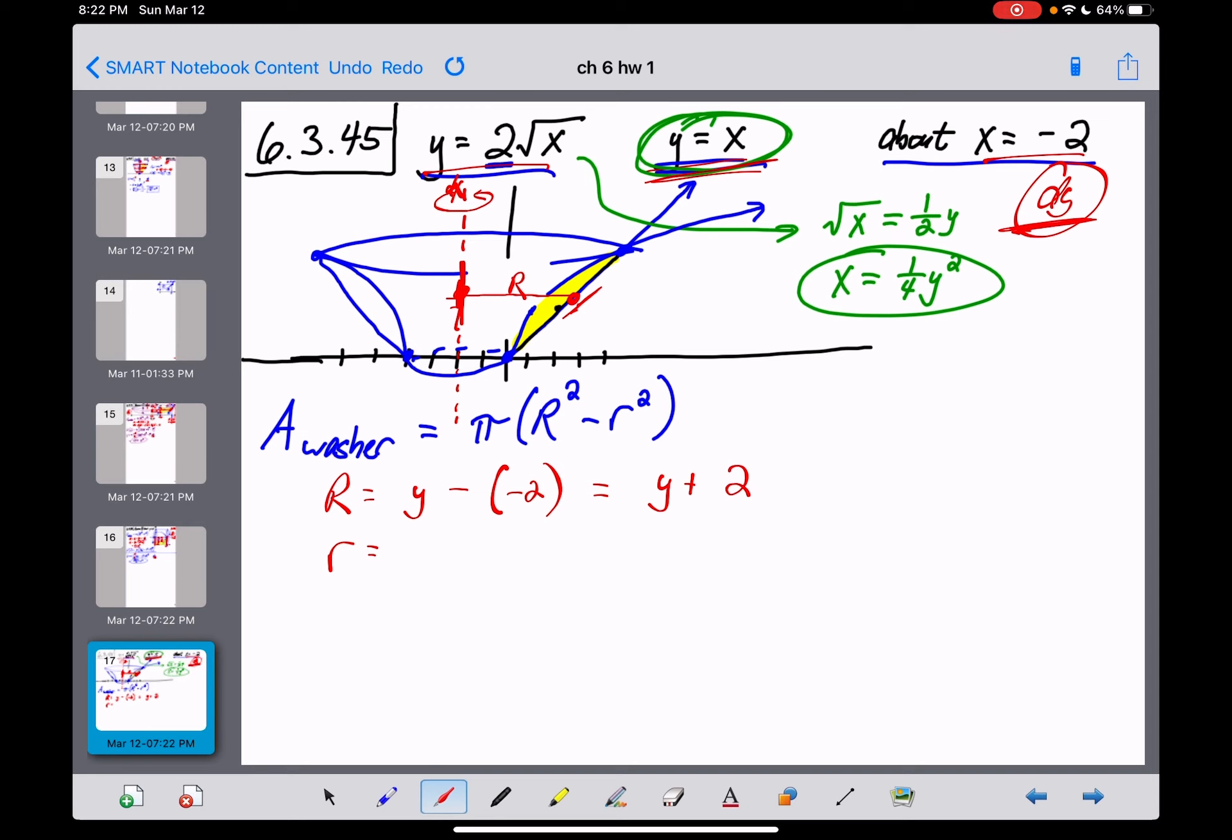Little r starts at the axis of revolution and goes until it hits the first curve and stops there. And the first curve, I should say the one on the right, is x equals one-quarter y squared, minus, and what stops it on the left? There's the negative 2 yet again. So that's going to give us a little r expression of one-fourth y squared plus 2.